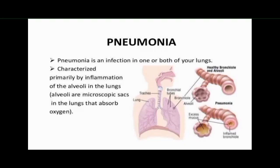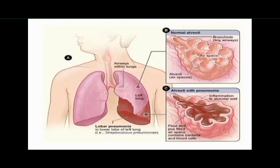Pneumonia is an acute respiratory illness associated with recently developed radiological pulmonary shadowing, which may be segmental, lobar, or multi-lobar. It causes inflammation in the lungs characterized by accumulation and secretion of inflammatory cells in the alveoli.